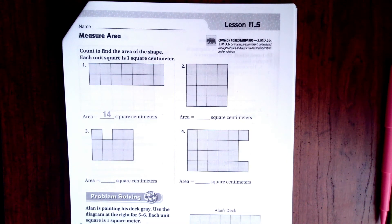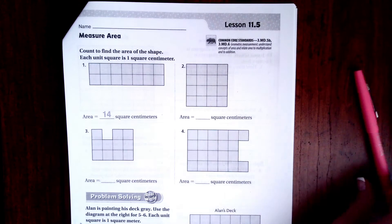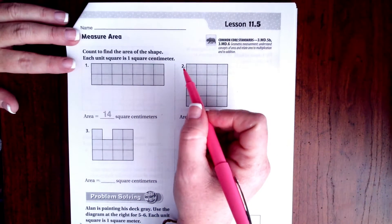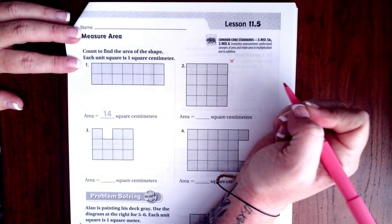Hi guys, welcome to third grade, chapter 11, lesson 5. We're going to go ahead and get started. So when we are finding area, we are just multiplying the two sides together.